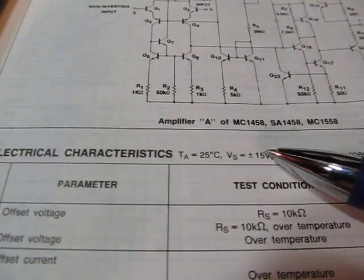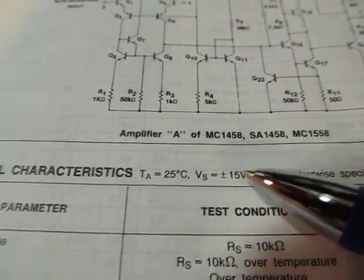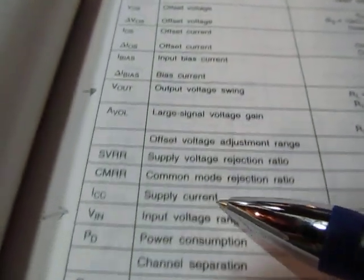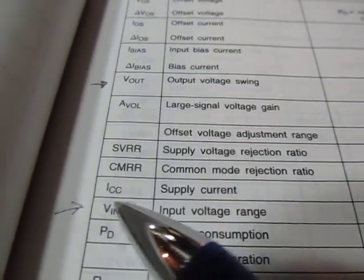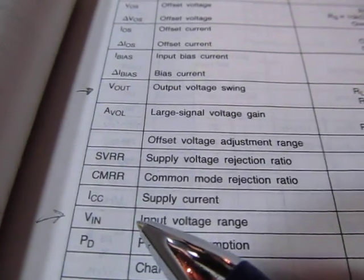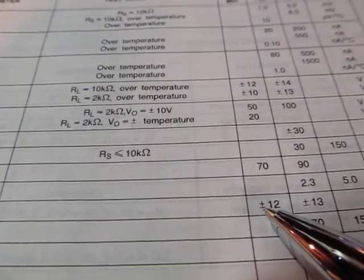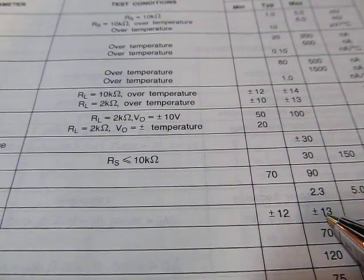If we take a look at some of the DC characteristics here, specced at plus or minus 15 volts. Well, some of the important specs we want to worry about are right here. Here's our input voltage range. Sometimes it's called the input common mode range. That input voltage range is specced minimum plus or minus 12 volts and typically plus or minus 13.